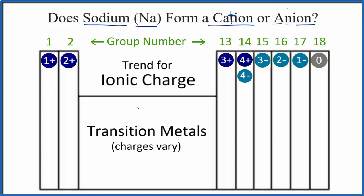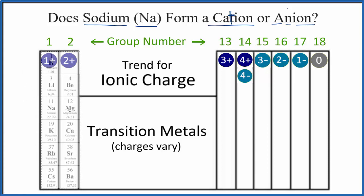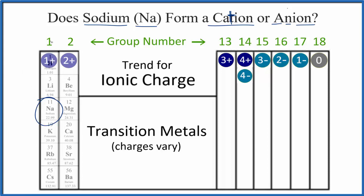If we look at the periodic table — this is a very simplified version — we see Group 1: all of these elements form ions that are one plus. They're cations. Group 2 is two plus. Skip the transition metals and so on. So we want to know whether sodium forms a cation or an anion. Sodium is right here on the periodic table — it's in Group 1, so it's going to have a one plus ionic charge. We just write a plus up there. Because of that, sodium is a cation; it has that positive charge.